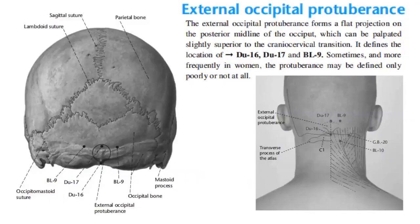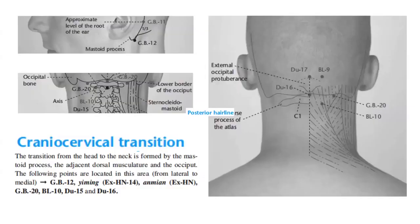Next, we have the craniocervical transition. The transition from the head to the neck is formed by the mastoid process, the adjacent dorsal musculature, and the occiput. The following points are located in this area from lateral to medial: GB12, Yi Ming, Anion, GB20, Bladder 10, Du 15, and Du 16.